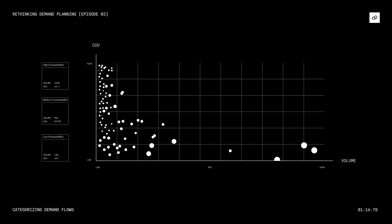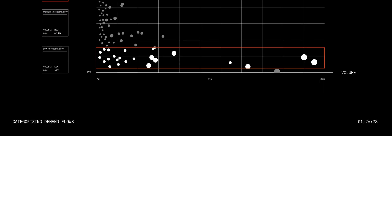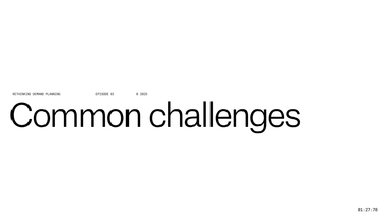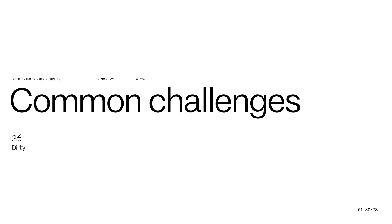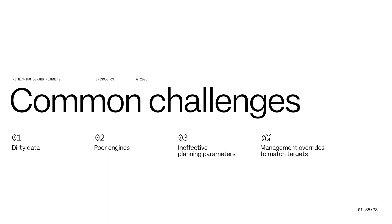One: Assuming monthly sales, products with a COV of less than 0.3 have high forecastability. These are usually of mid to high volume significance. Common challenges for this demand flow are dirty data, poor engines, ineffective planning parameters, and management overrides to match targets — all of which can degrade the forecast.